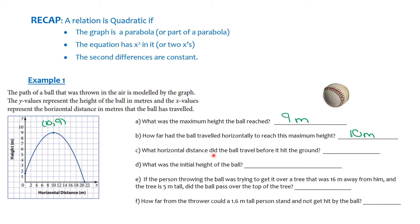Part C says: what horizontal distance did the ball travel before it hit the ground? When it hit the ground, the ball's height is zero. So I go all the way across to this blue dot. That coordinate is 21 and zero. So the horizontal distance — it was 21 meters horizontally when the ball hit the ground.